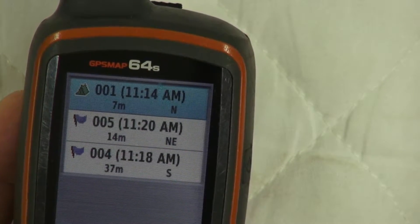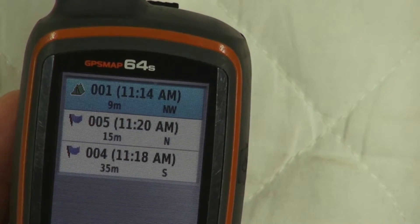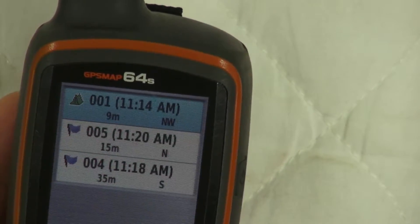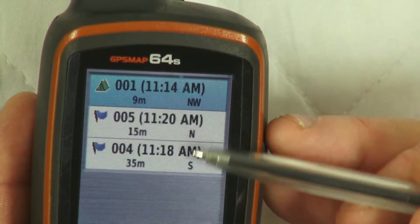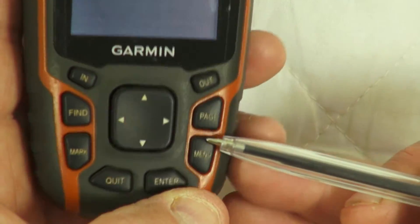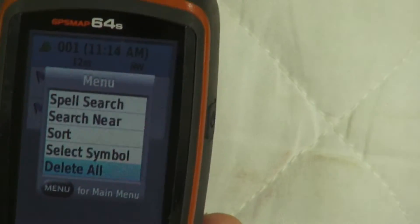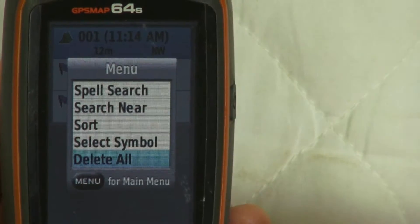There's one more thing you can do if you want to completely clear your GPS. On this screen, instead of pressing enter to highlight individual waypoints, press the menu key and you've got the option to delete all.